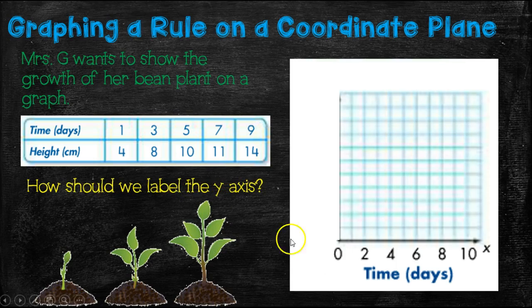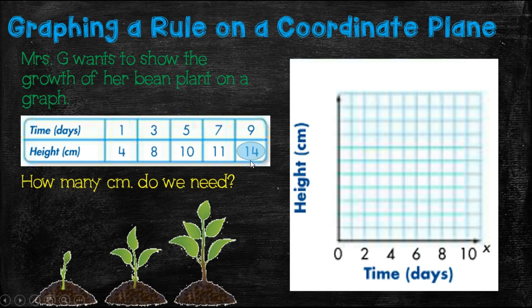So how should we label the y-axis? Well, we have the time or the days on the x-axis. So what is left? Well, the height in centimeters is what we would go ahead and label the y-axis. How many centimeters do we need? Well, the highest that my bean plant has gotten is 14 centimeters. So we need at least 14 centimeters on our y-axis. And we'll just go ahead and make it go all the way on up.